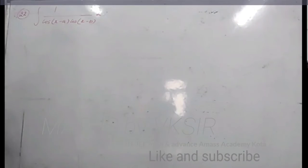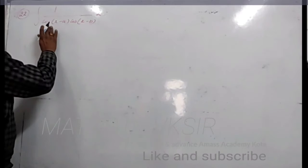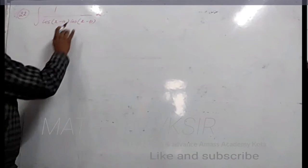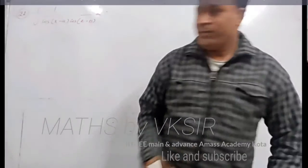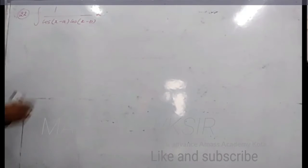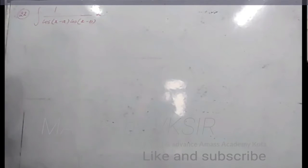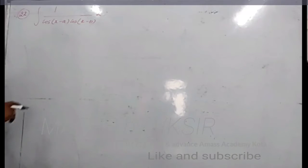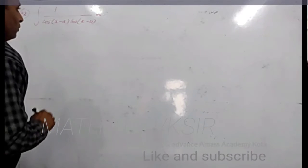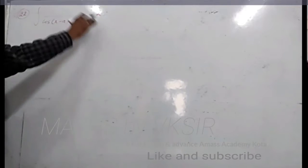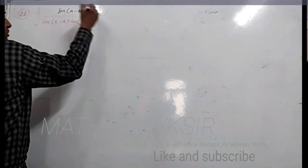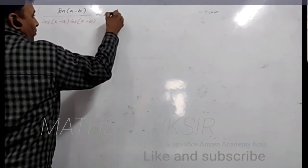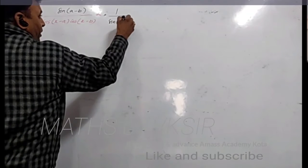The method to understand this — it could have both sin, both cos, one sin and one cos. Any type of question can appear. Here a and b are constant values. First of all, multiply and divide by sin(a-b).